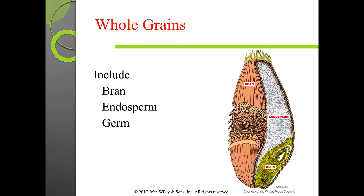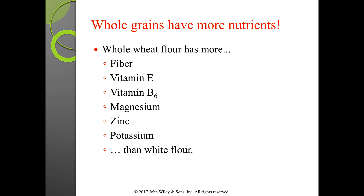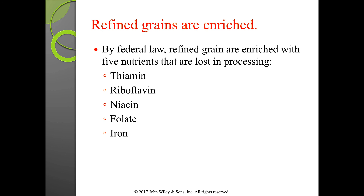When grains are processed, the three parts are separated and some nutrients are lost — most notably fiber. Most Americans are only getting about nine grams of fiber a day when we need 25 to 35 grams. Whole grains have far more fiber, vitamin E, B6, magnesium, zinc, and potassium than white flour. Refined grains are enriched by law with five nutrients lost in processing: thiamine, riboflavin, niacin, folate, and iron.